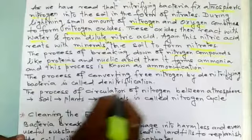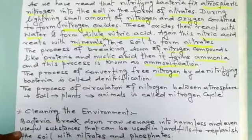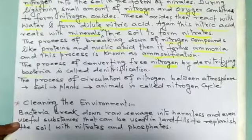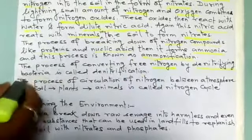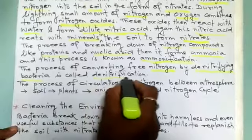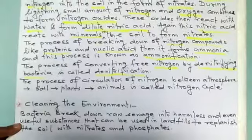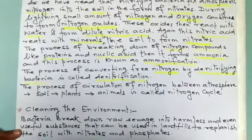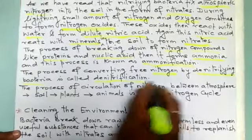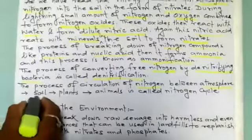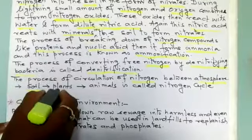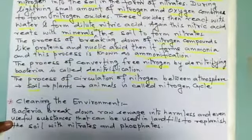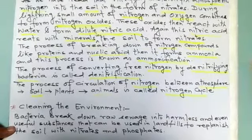The process of converting free nitrogen by denitrifying bacteria is called denitrification. The entire circulation of nitrogen between the atmosphere, back to the soil, then to plants and to animals — this entire process is called the nitrogen cycle.